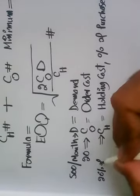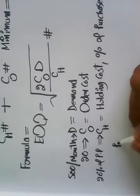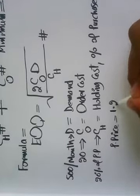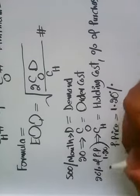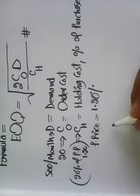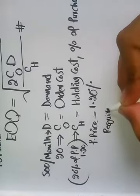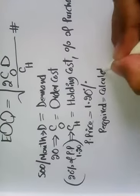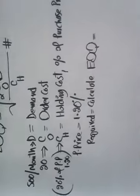Purchase price we have is equal to 1.20. It means 20 percent of 1.20. So required: calculate Economic Order Quantity where holding cost and ordering cost is at the minimum level.